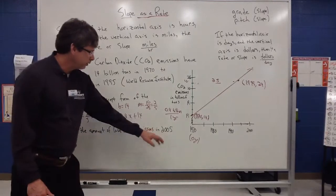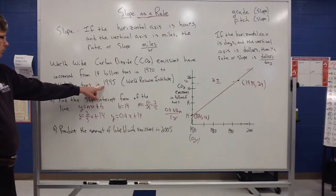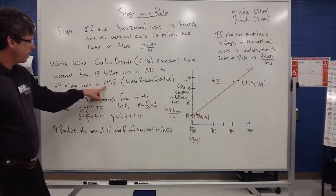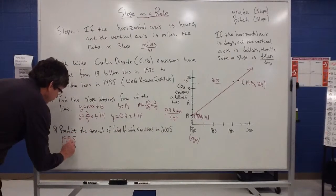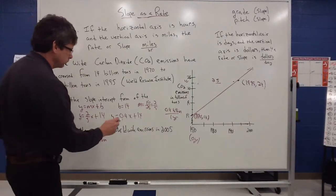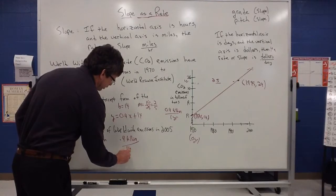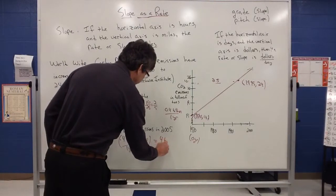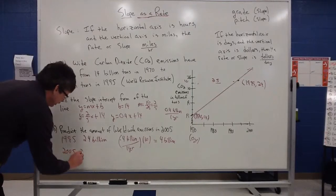So a couple of ways to express our slope. We can express it as a fraction or we can actually even express it as what we call a unit rate. So predict the amount of worldwide emissions in 2005. Well, right now we know that in 1995, it's at 24 billion. And what we're picking up on is it's increasing by 0.4 billion per year. So from 1995 to 2005, that would be 10 more years. So in 1995, we know that there was 24 billion, and we also know that it's going to change at this rate of 0.4 billion per year. And if 10 years goes by, that's going to give me an increase of 4 billion. So it looks like in 2005, I'm going to have 28 billion altogether.